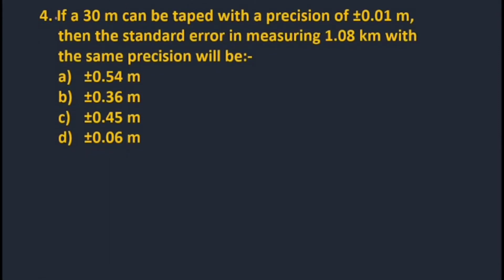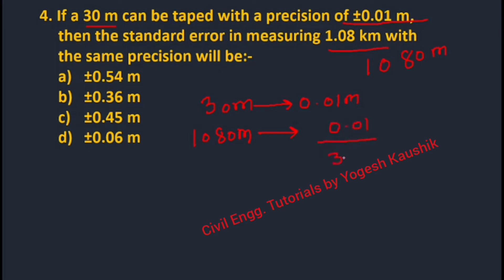Question four: A 30 m tape has precision of 0.01 m. Standard error for 1.08 km = 1080 m is calculated as (0.01/30) × 1080 = ±0.36 m. So option B is the correct option.